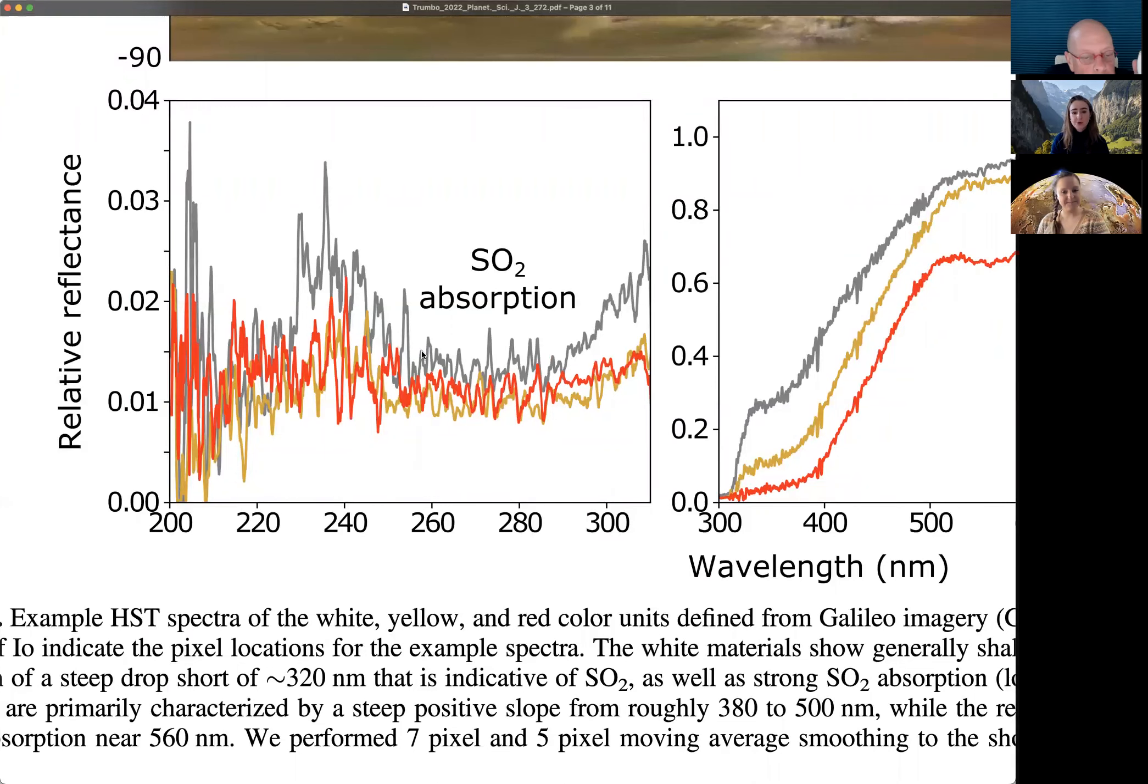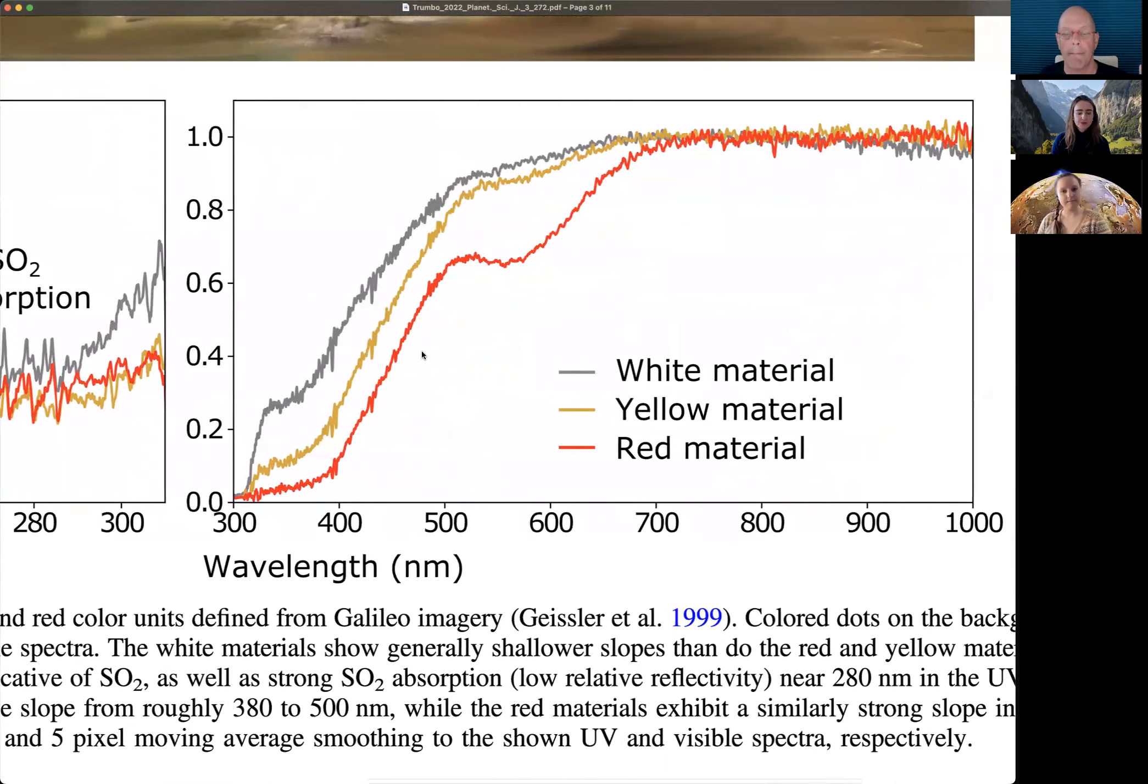On the left is the UV and you can see there's this characteristic W shape that's either more pronounced or less pronounced. That is just SO2 frost. That's what SO2 frost looks like in the UV. So the white materials strongly resemble SO2 frost, the red and yellow slightly less. Over on the right, you can see that the white materials have shallower slopes overall across the near UV and short wavelength visible. The yellow materials have a really strong absorption edge starting in about 500 nanometers or so. And then the red materials are defined by this dramatic absorption feature near 560 nanometers. So there are clear spectral differences between these different units that we can see with HST.